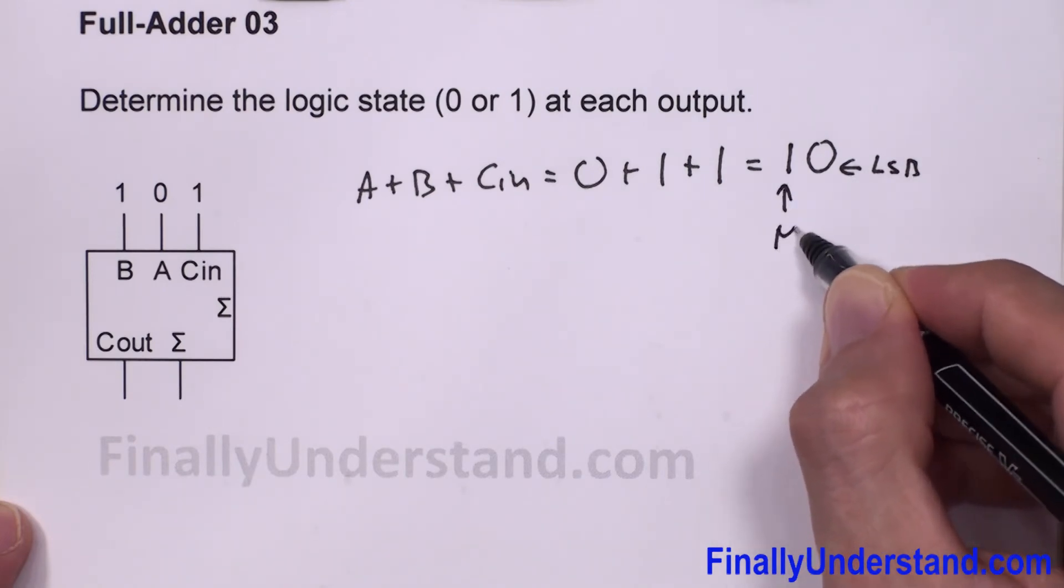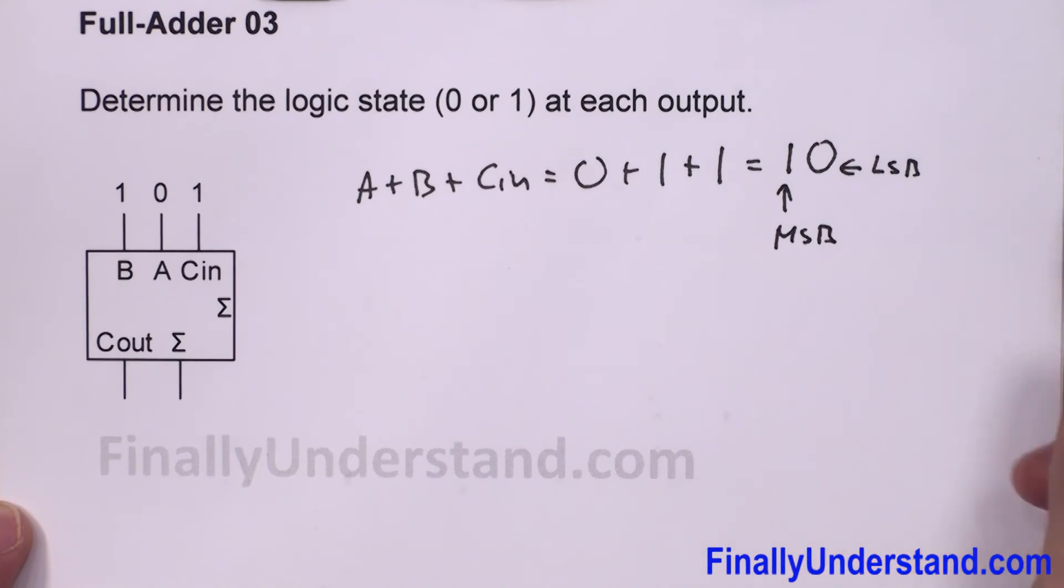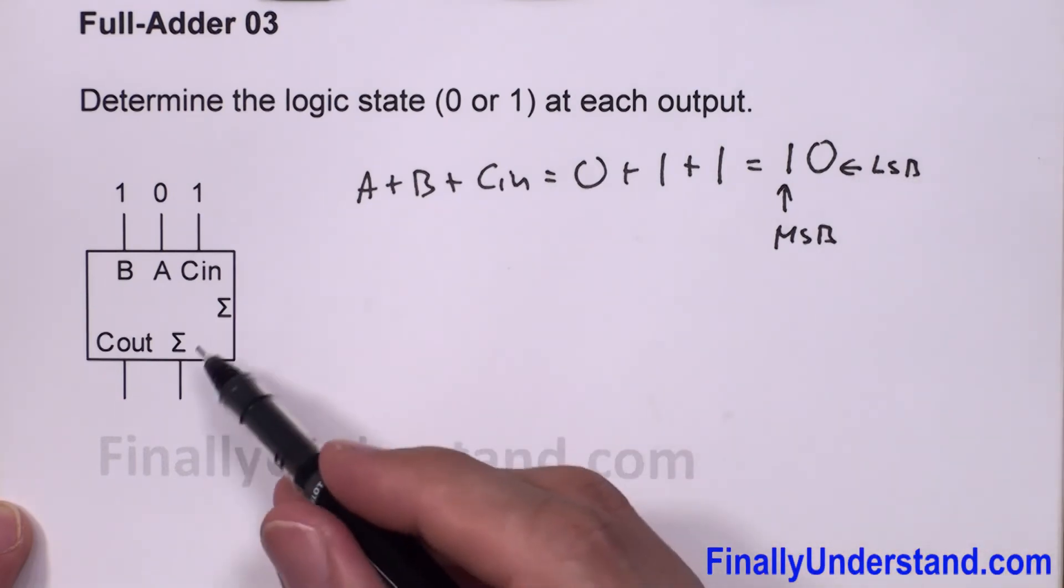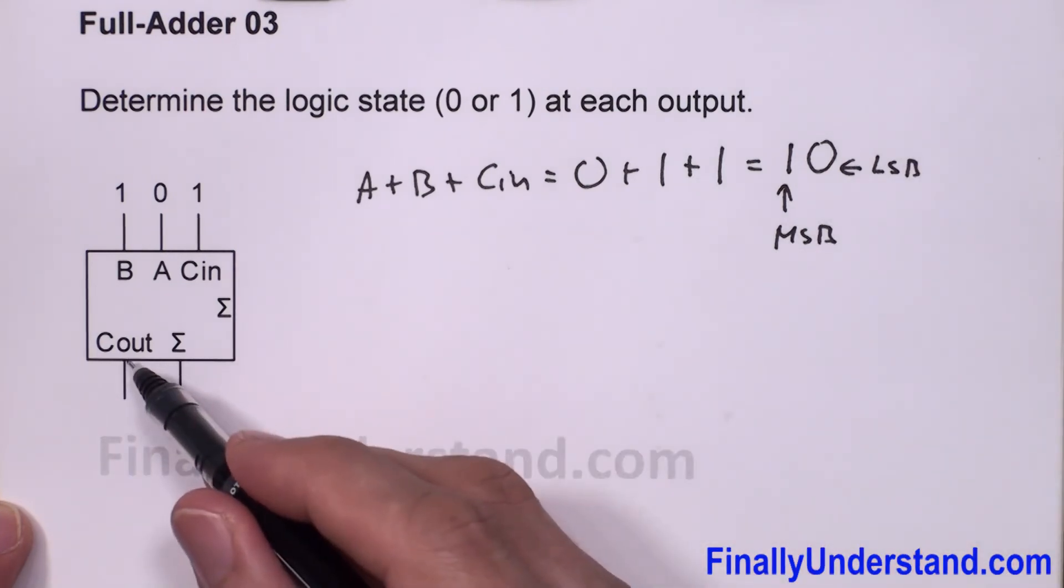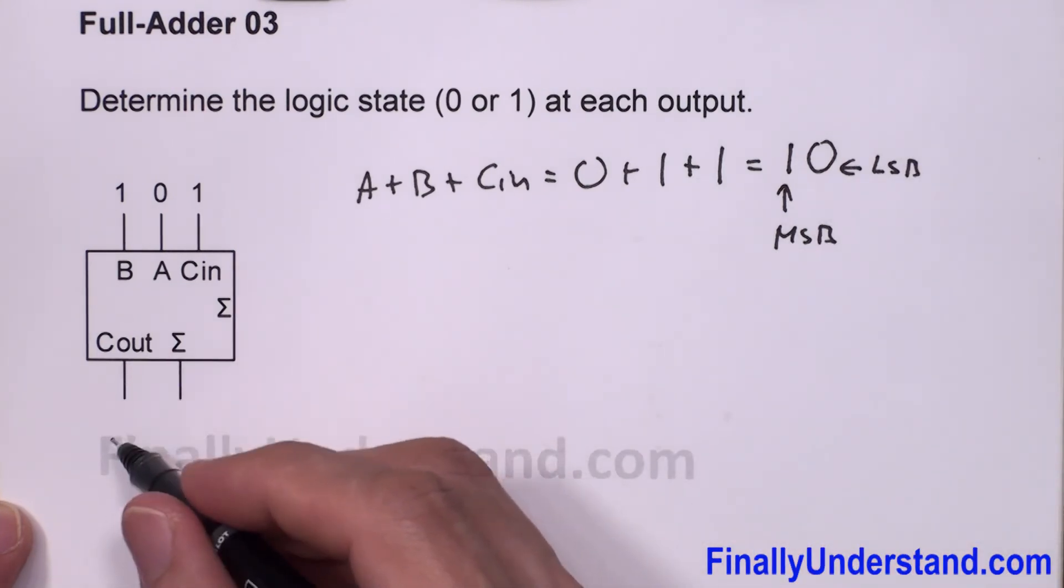This is my most significant bit. Keep in mind that the least significant bit represents the sum and the most significant bit represents carry out. That's why I'm going to write my answer over here.